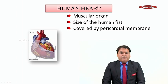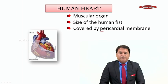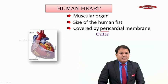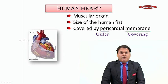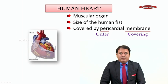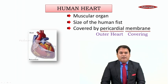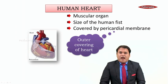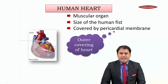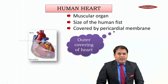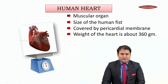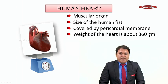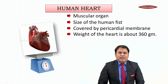What do we mean by the word pericardial membrane? The word 'peri' means outer, the word 'membrane' means covering, and the word 'cardial' refers to heart. So it is the outer covering of the heart. As you can see, the heart is protected by the pericardial membrane. The weight of the human heart is approximately 360 grams.